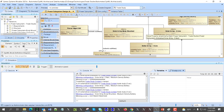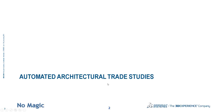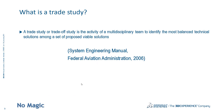That was the demonstration — you will find the sample in the video description. Now going through some slides: a trade study or trade-off study is the activity of a multidisciplinary team to identify the most balanced technical solution among a set of proposed variable solutions. This is one of the major benefits you get from MBSE — if you do model-based systems engineering and don't optimize your solution architectures on criteria like MOEs, functions, and interfaces, you're not getting the optimal architecture.